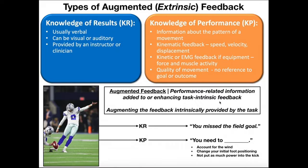What would be an example of task-intrinsic feedback? If you're doing an Olympic lift — let's say a clean and jerk — normally, if you're not going to get the lift, if you're going to fail at that attempt, you usually know during some point within the task. You don't need a video recording, you don't need someone to tell you that you messed up. You kind of know at some point in the task if you're not going to get it. That would be task-intrinsic feedback — you didn't need anybody to tell you that.